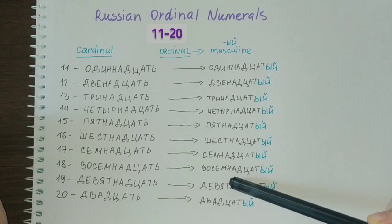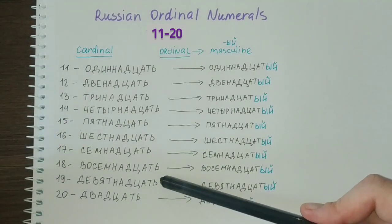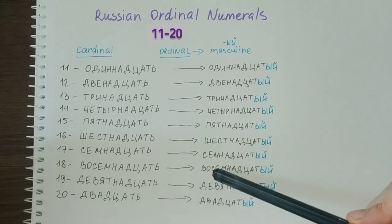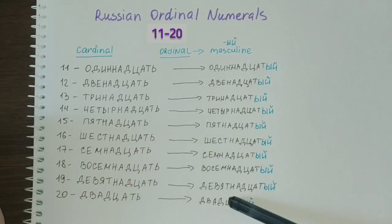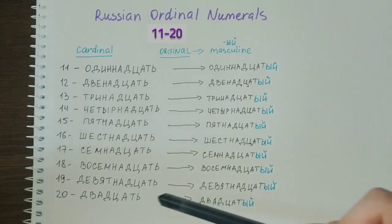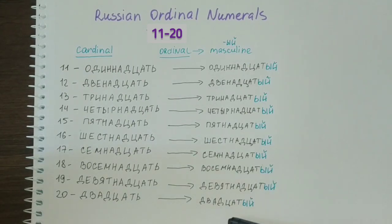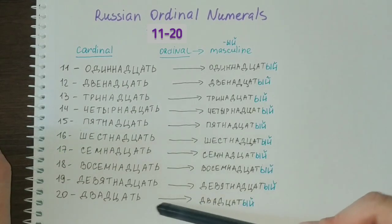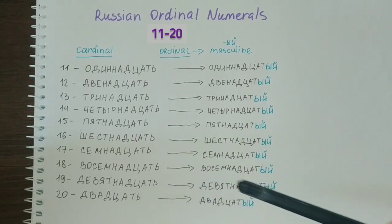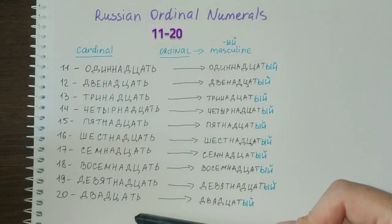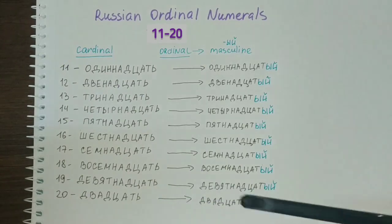18th is восемнадцатый, from восемнадцать (eighteen). 19th is девятнадцатый, from девятнадцать (nineteen). And pay attention to the last one, which is двадцатый, meaning twentieth — you can see that the stress changes here. The cardinal is двадцать, but the ordinal is двадцатый. Двадцать → двадцатый.